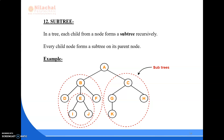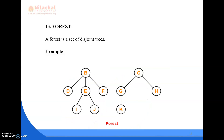Next is the term subtree. In a tree, each child from a node forms a subtree recursively. Each child node forms a subtree on its parent node. For example, E with I and J is a subtree; everything under B is a subtree; everything under C is a subtree; and the entire tree itself can also be considered a subtree.